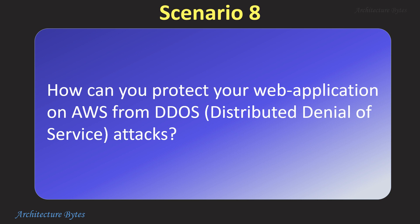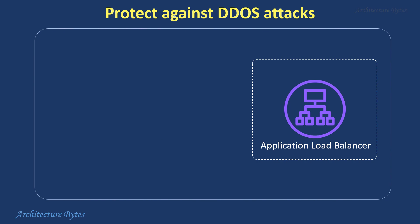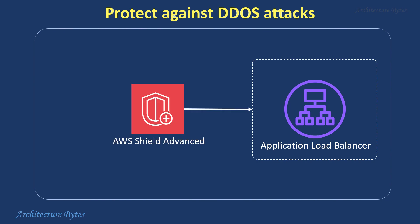How can you protect your web application on AWS from DDoS attacks? AWS Shield, a managed DDoS protection service, safeguards your applications on AWS from distributed denial of service attacks that aim to overwhelm them. It offers two tiers: a standard free tier for basic protection, and an advanced paid tier for enhanced DDoS mitigation and response capabilities.